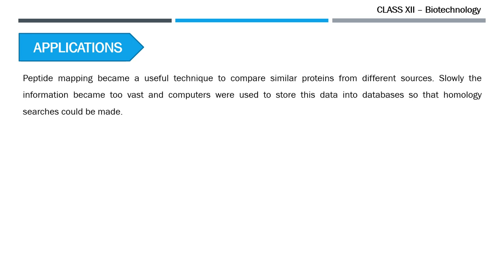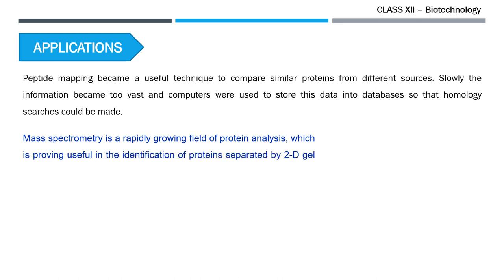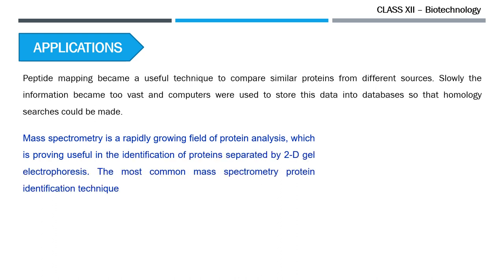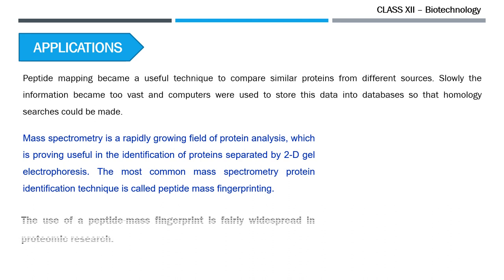This peptide mapping has become a very useful technique to compare similar proteins from different sources. The mapping of various proteins has generated vast information which is now being stored in databases using computers so that this information may be easily accessible. Nowadays, no one uses the original methods used by Ingram such as paper electrophoresis and chromatography. Mass spectrometry is now widely used in protein analysis, and the use of peptide mass fingerprinting has found widespread use in proteomic research.